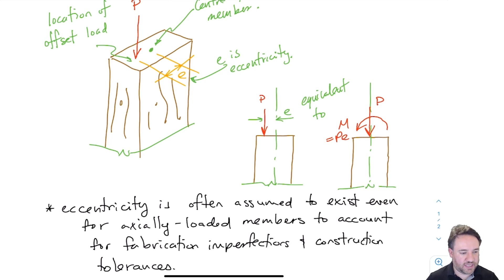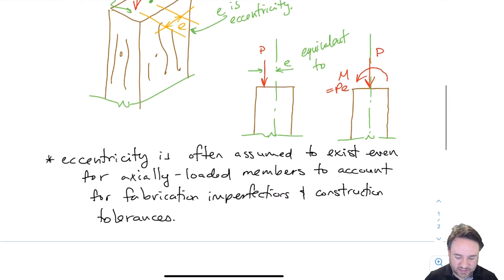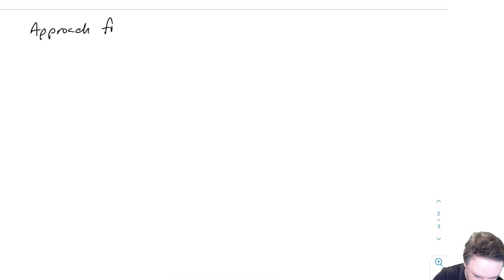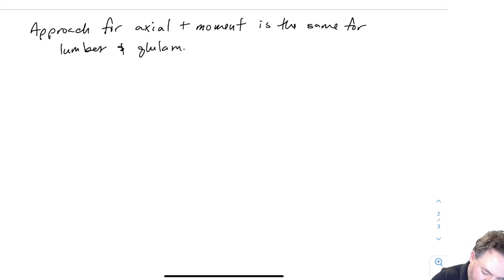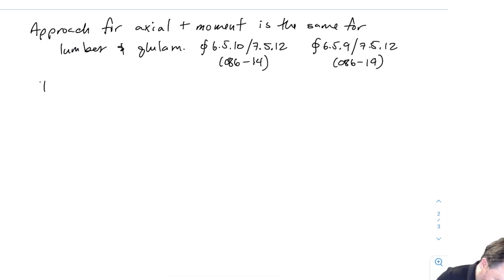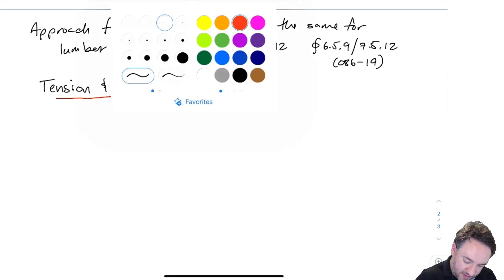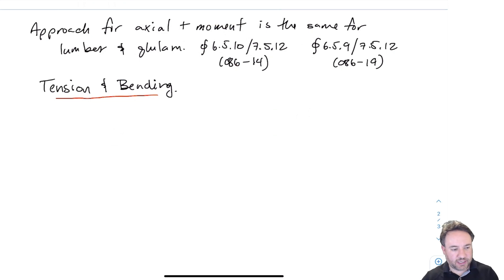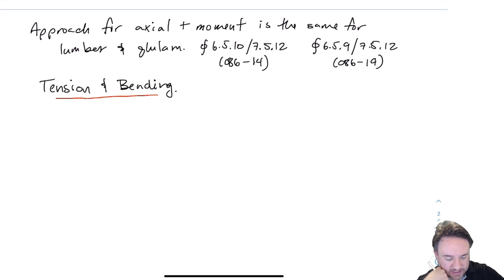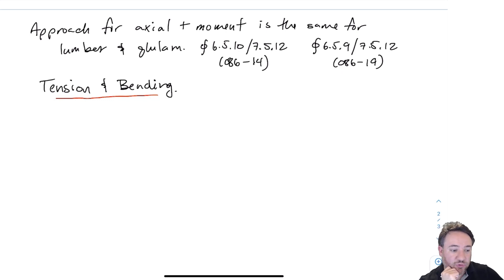Now let's look at how we take combined axial load and moment into account in the equations in the standard. The approach is essentially the same between lumber and glulam for both the 2014 and 2019 standards. It is split into what happens with tension and bending versus compression and bending — something you've likely seen in other materials like concrete.